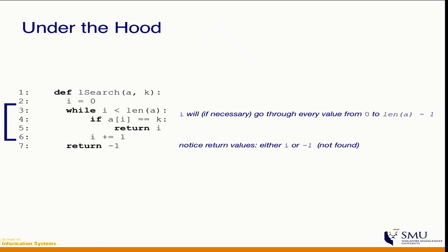The implementation is straightforward. You have a loop, and within the loop we look at every possible index i from 0 all the way to the last element, which is n minus 1. Each time, we check whether the element at index i is what we're looking for — which is k. If yes, then we return i; otherwise we return minus 1.